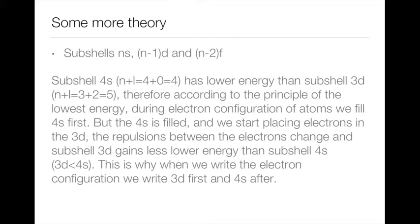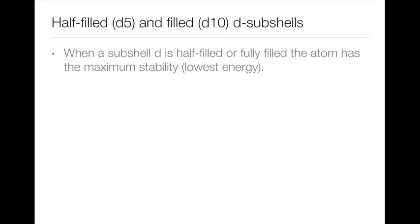Now, what happens when we have a half-filled D subshell — D with 5 electrons — and a fully filled D subshell — D with 10 electrons? The atom has the maximum stability, that is the lowest energy. Nature always wants to achieve maximum stability and lowest energy, so keep that in mind.